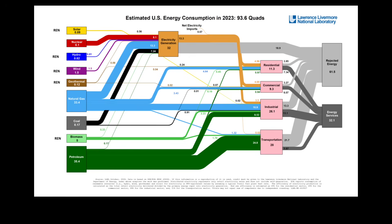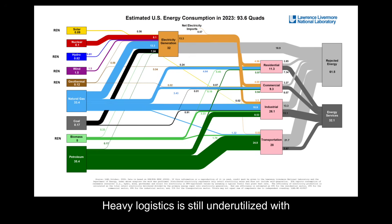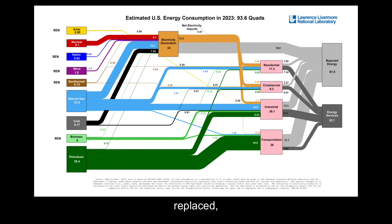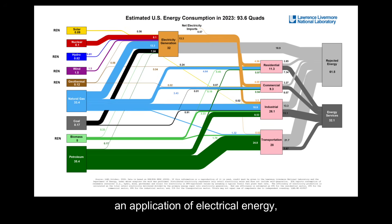plastics and over six thousand other products, and to heavy logistics involving trucks, trains, and ships. Heavy logistics is still underutilized with renewable sources, and it may take a long time for them to be replaced — or they may never be replaced at all. Electric vehicles, for example, which are an application of electrical energy,